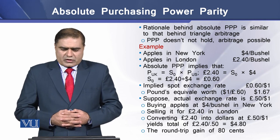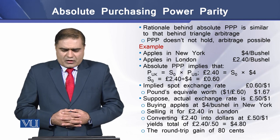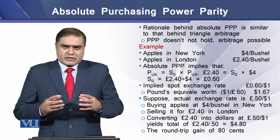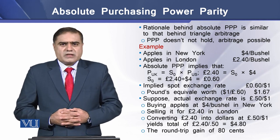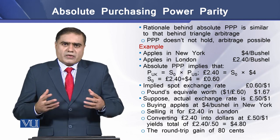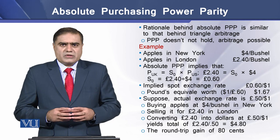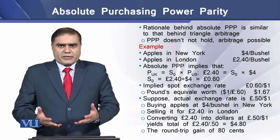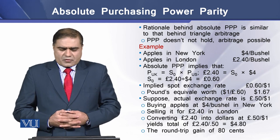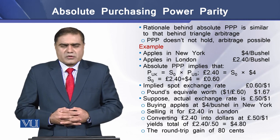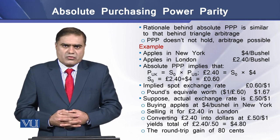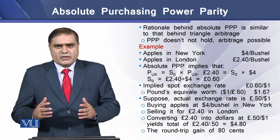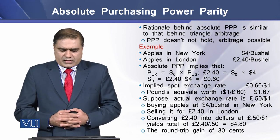Apples in New York are selling at $4 per bushel whereas apples in London are selling at £2.40 per bushel. Absolute purchasing power parity implies that the price in UK is equal to the price in US multiplied by the spot exchange rate. Putting these figures into the equation and rearranging, we arrive at an implied spot exchange rate of £0.60 per US dollar, meaning one pound equals 1.67 US dollars.